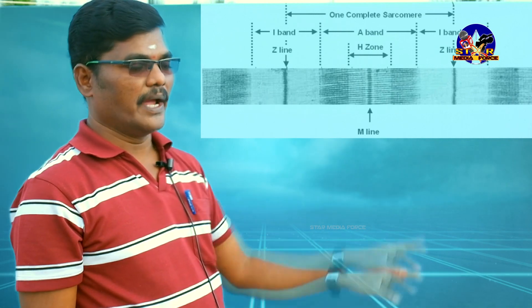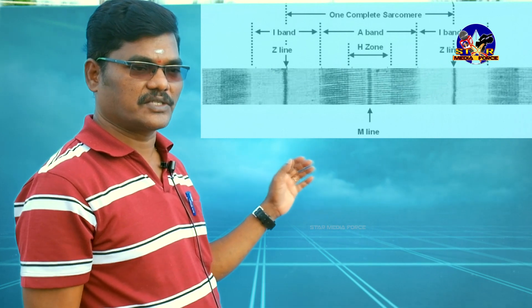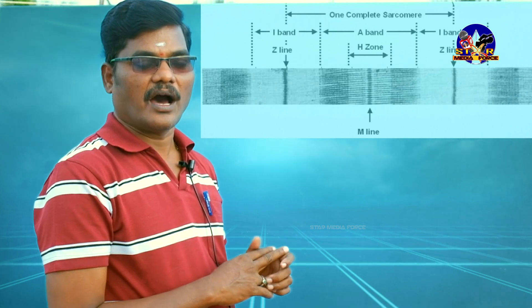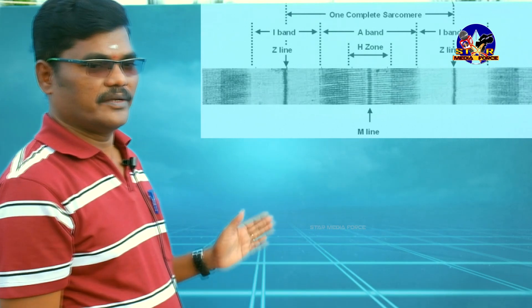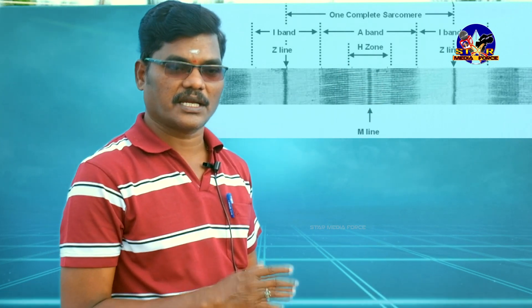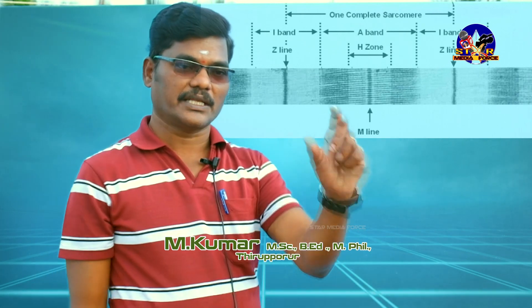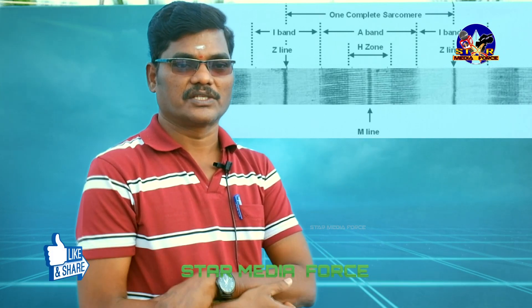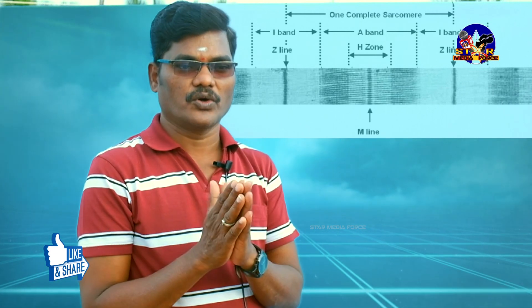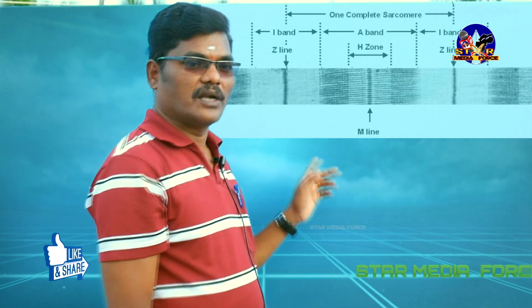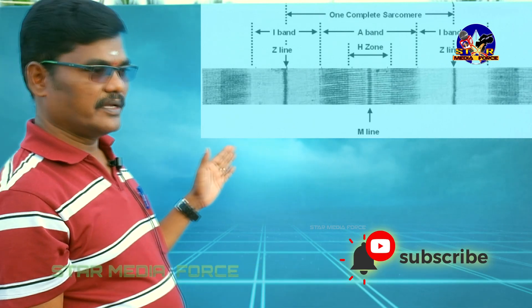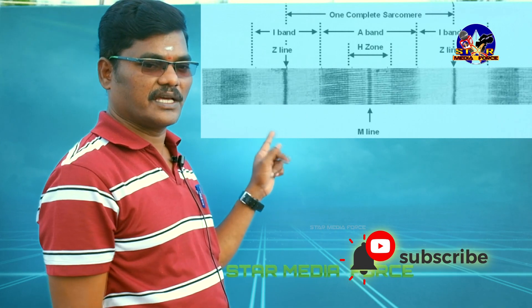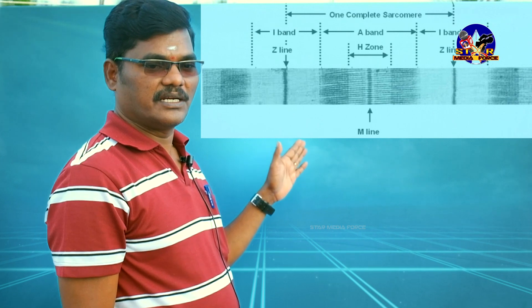Within the I band, there is one dark zigzag line called the Z line or Z disc. So to summarize: the rod-like structure contains alternating dark (A) and light (I) bands. Within the dark band, the central lighter region is the H zone, bisected by the M line. Within the I band, there is a zigzag Z disc. Keep it in mind.